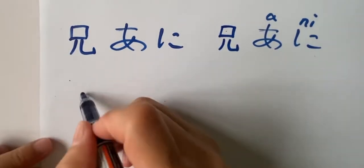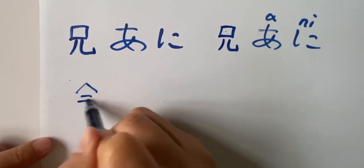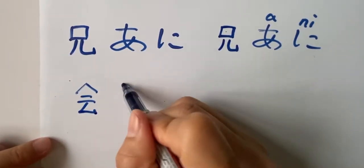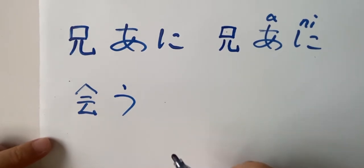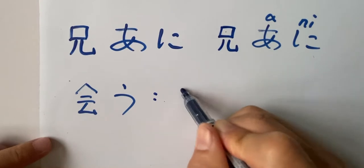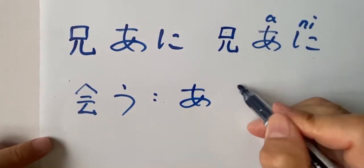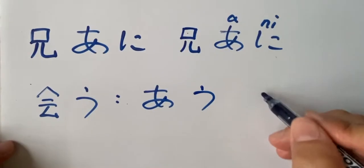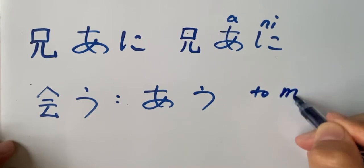It's a verb. Okay. Au. Right. This one is au. To meet. This is a verb. Verb.